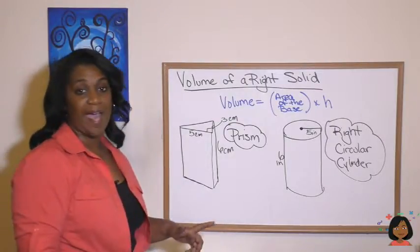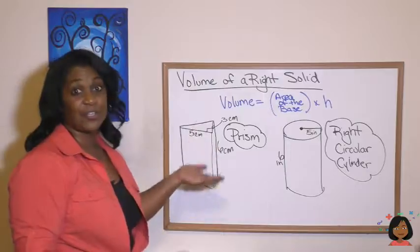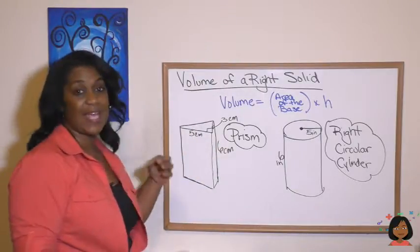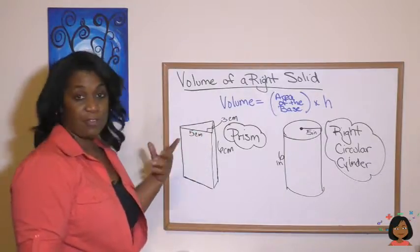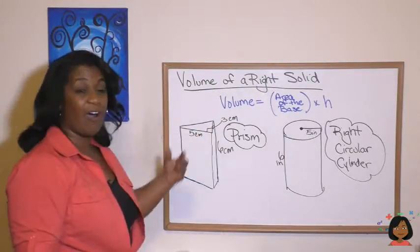So on the left, we have what's called a triangular prism, right, because we have a triangle as the base. And anytime you have a polygon on your three dimensional figure here, we can call that a prism.